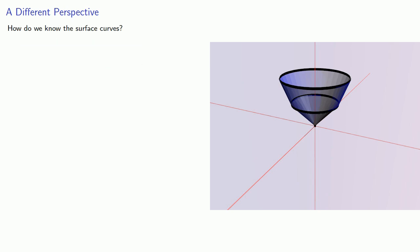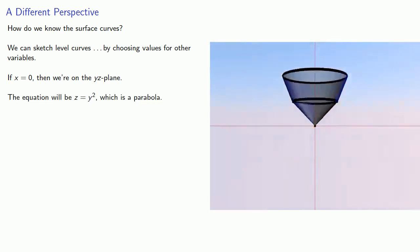And the answer to that is we can sketch level curves by choosing values for other variables. And in fact, we've already looked at this curve. For example, we found that if x is equal to 0, then we're on the yz plane. And the equation will be z equals y squared, which is a parabola. And so we know that our surface has to curve when it goes through the yz plane.